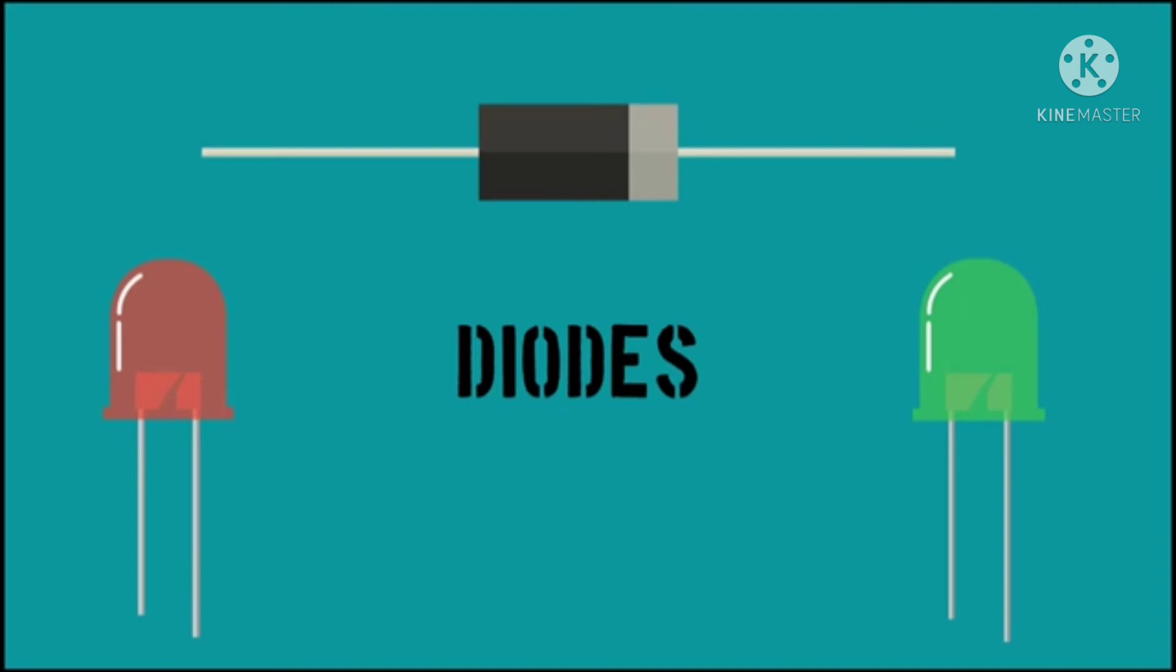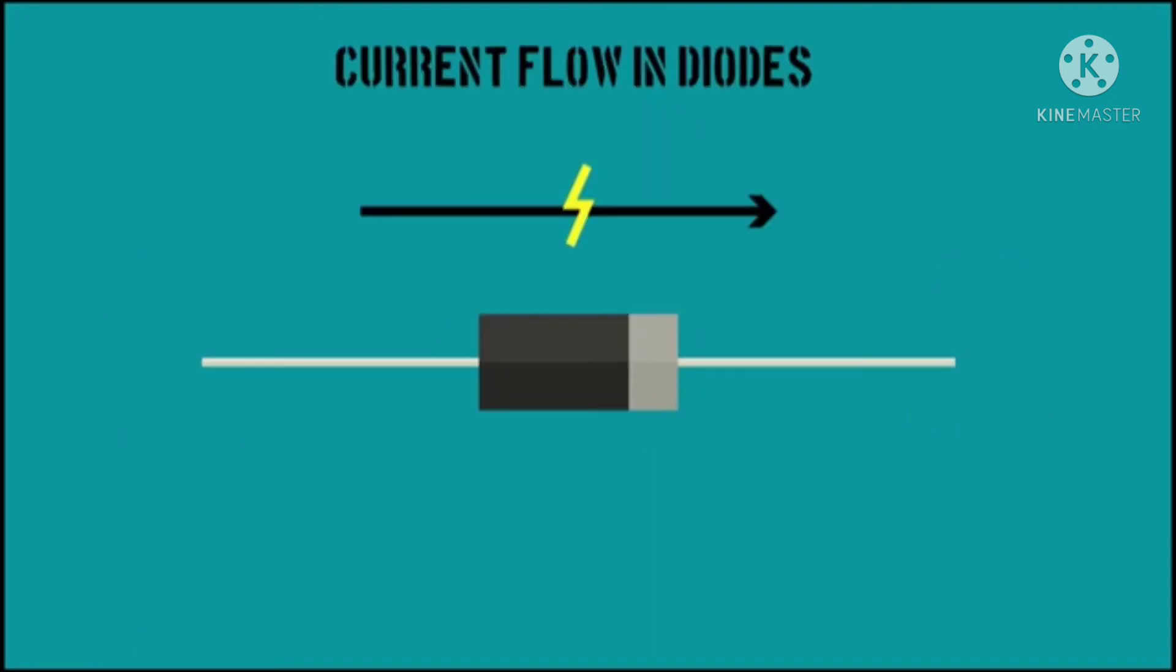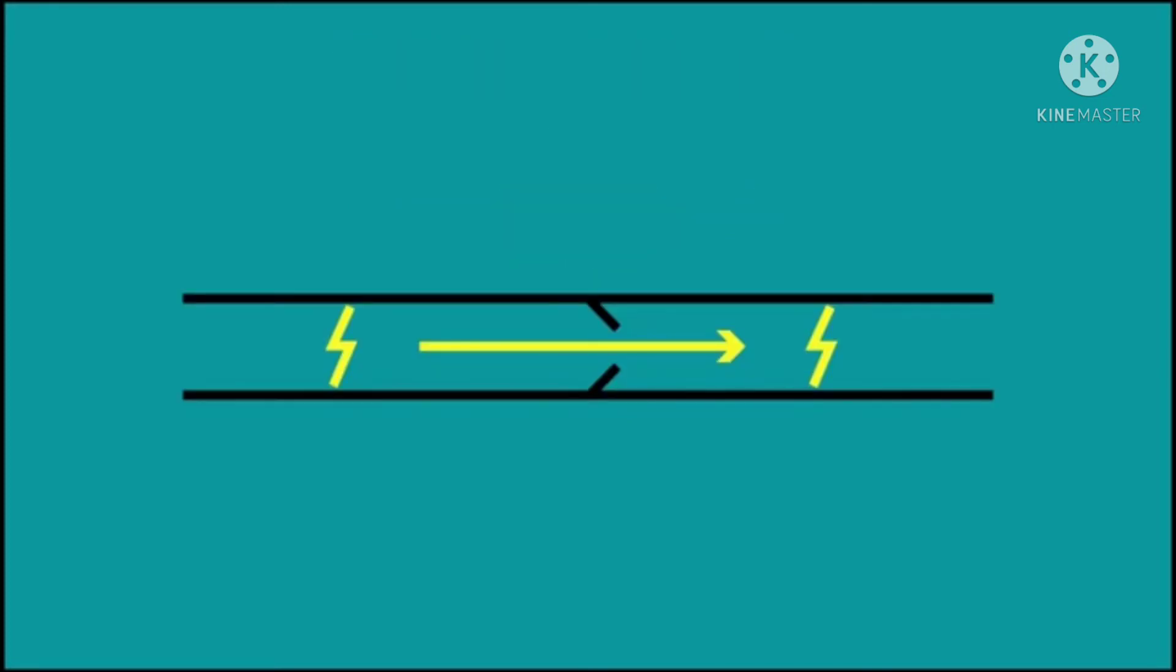Diodes have many unique uses. However, their general purpose is to limit the flow of current to one direction and not the other. In the water flow analogy, diodes can quite simply be called a one-way valve.